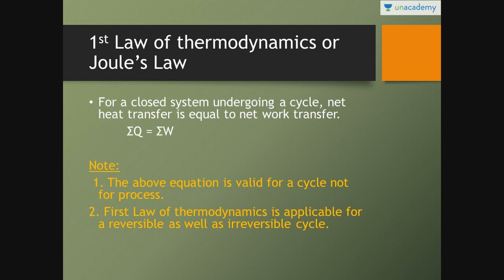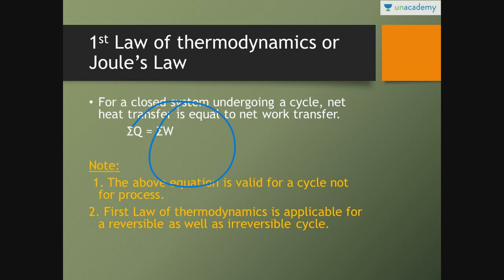So, what is the first law of thermodynamics? The first law of thermodynamics came for a cycle — initially the first law came for a cycle, not for a process. For a closed system undergoing a cycle, net heat transfer is equal to net work transfer. Always keep in mind: the above equation is valid for a cycle, not for a process.